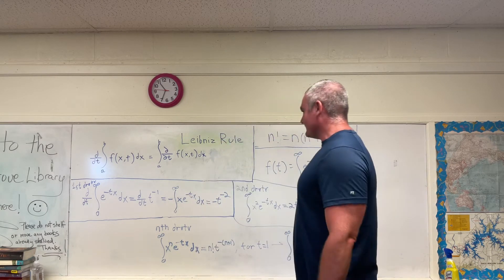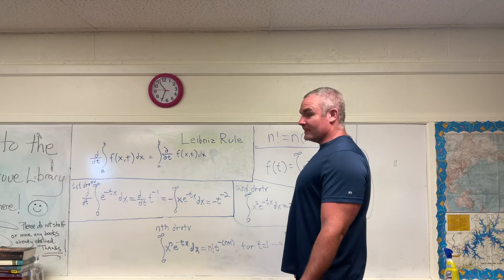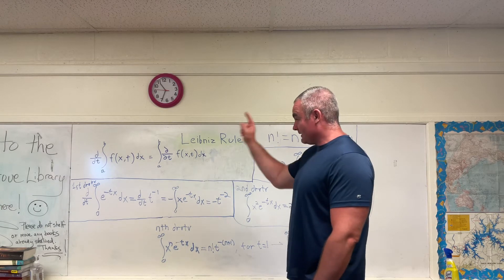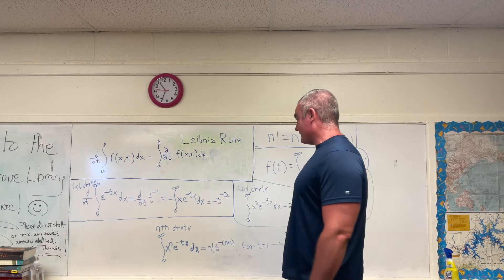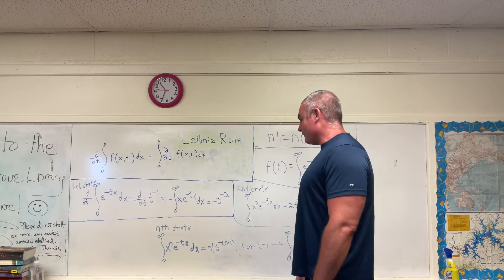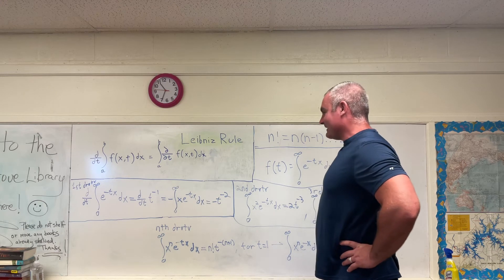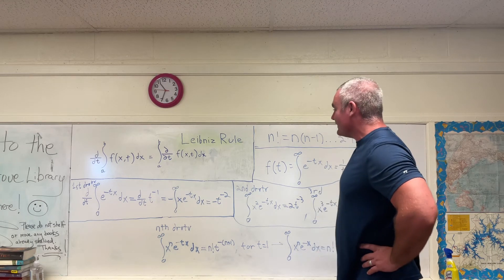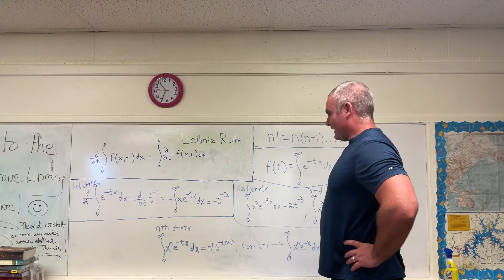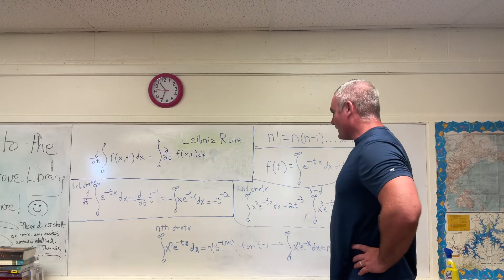What you get, if you use the Leibniz rule for differentiation under the integral sign on that first integral right there, you'll get that negative integral 0 to infinity of x times e to the negative tx dx is equal to negative t to the negative 2. I hope you can see how I arrived at that.